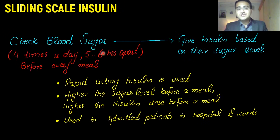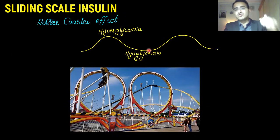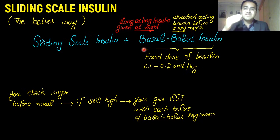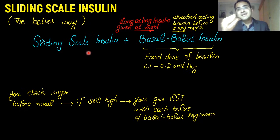In summary, you check the blood sugar levels and give insulin based on those levels. This is a chart showing blood glucose level and the corresponding insulin dose. This leads to a roller coaster effect with episodes of hypoglycemia and hyperglycemia. The better way is to give a fixed amount of insulin via basal bolus dose, and if the glucose level is not controlled, check it before meals, apply sliding scale insulin, calculate the extra dose, and add it to each and every bolus before the meal.